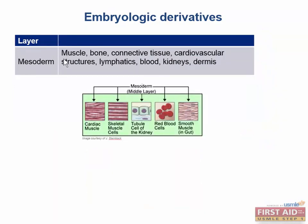Then we have our mesoderm — highest yield, just remember muscle. We've also got connective tissue, kidneys, vagina, adrenal cortex, cardiovascular structures — but not the aorticopulmonary septum, which was neural crest of the ectoderm — and the lymphatics.